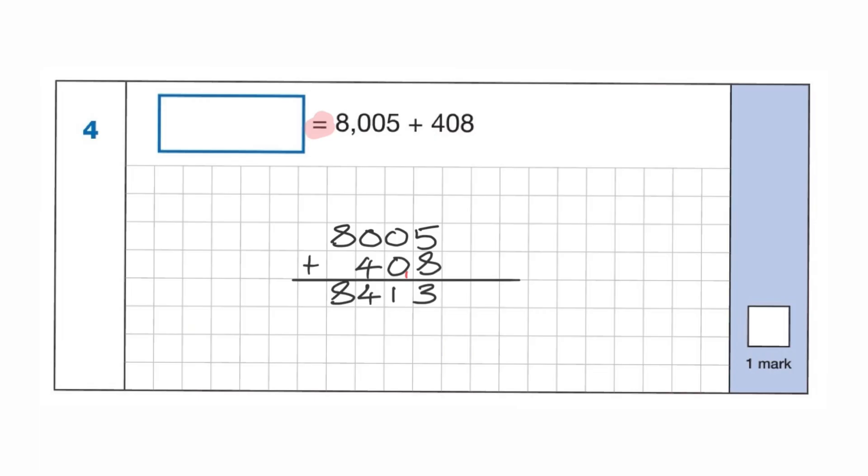And this one essentially, it's the fourth question on the paper. 8,005 add 408. Really, you could just add, if you partitioned 408, we know we've got 400 here and we've got 8. In our heads, we could have just gone, well, that must be 8,405 and then just added the 8 on to get the answer of 8,413. So we could have done that one in our head as well.